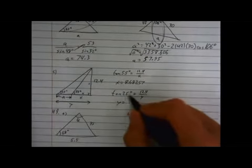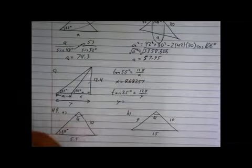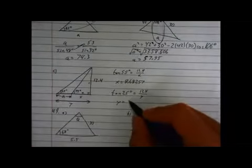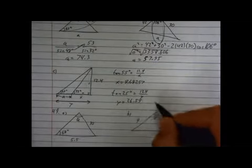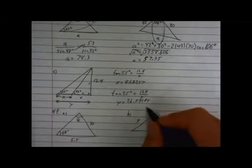So y, again, goes up, that comes down, 12.4 divided by tan 25 this time is equal to 26.591885, around it somewhere.